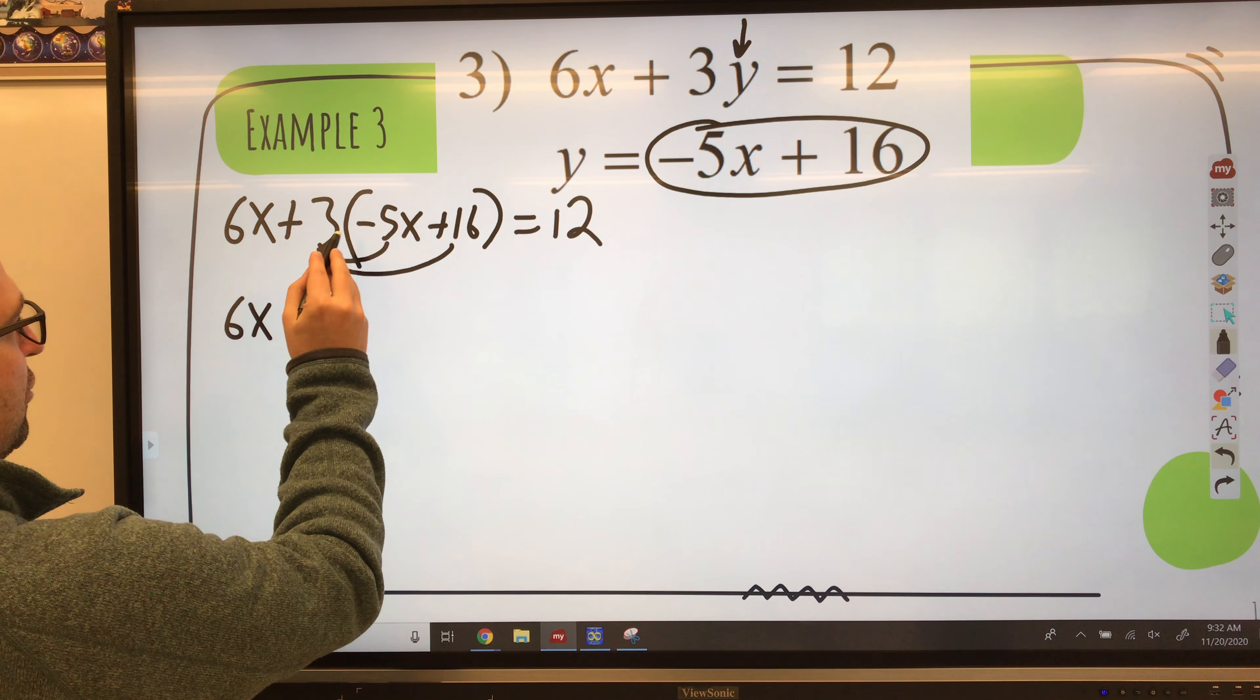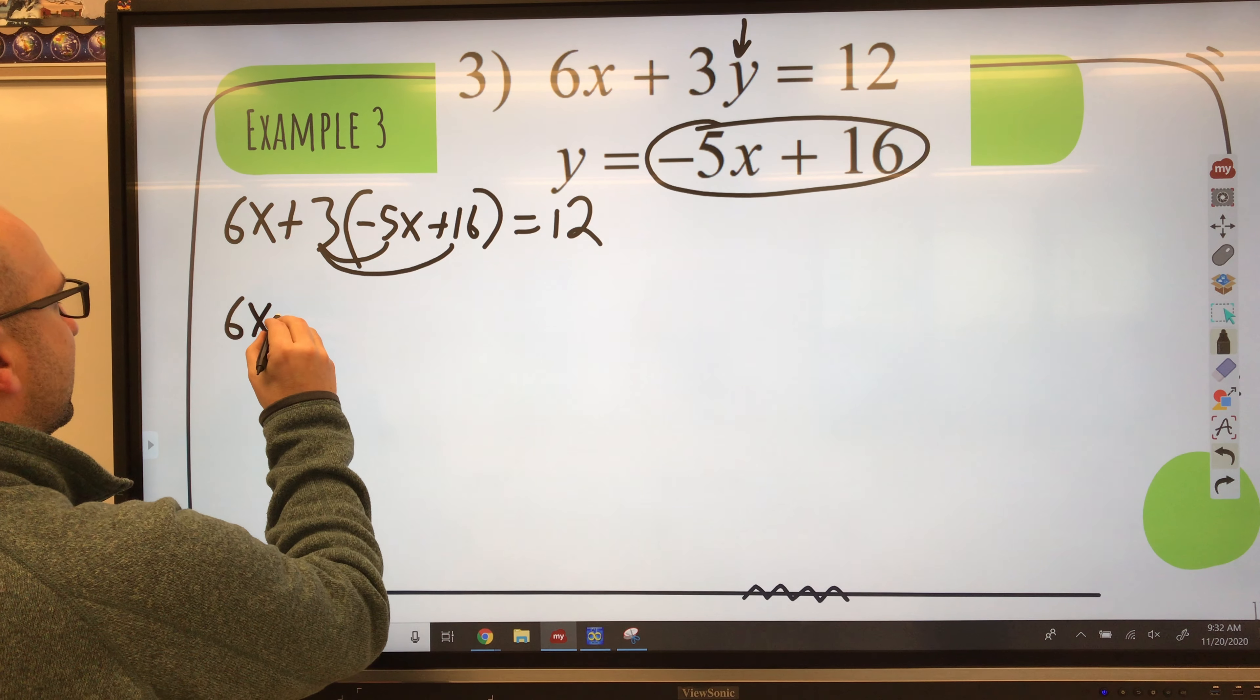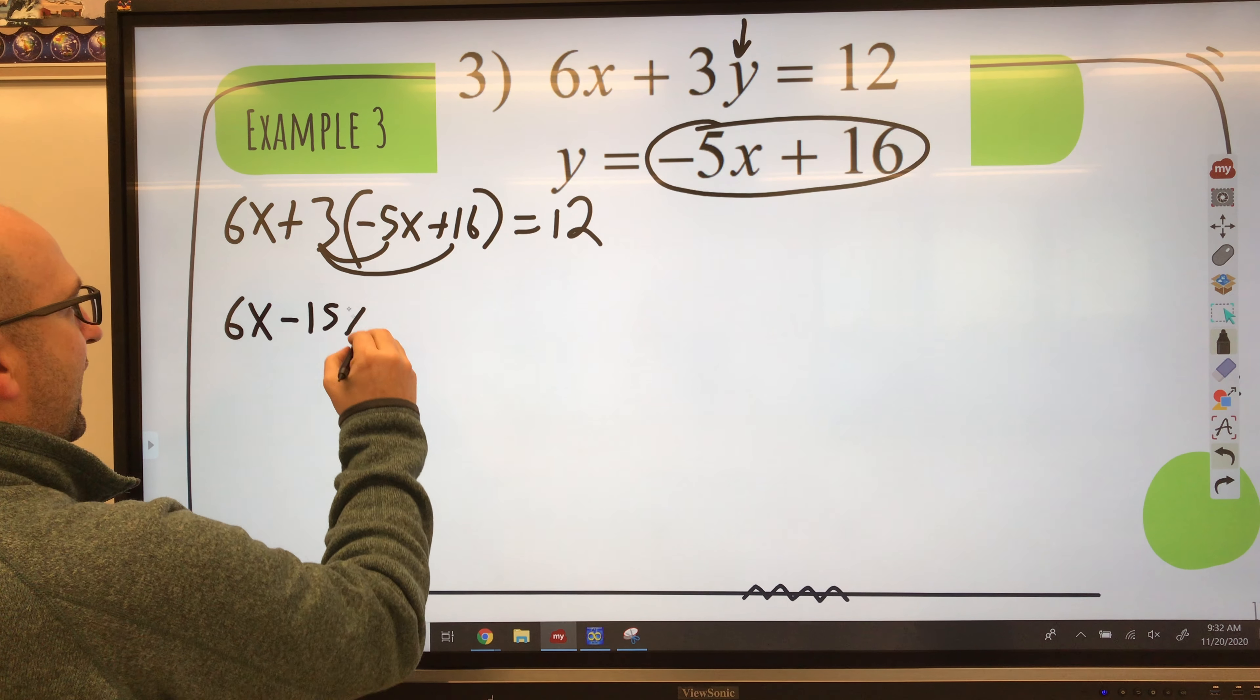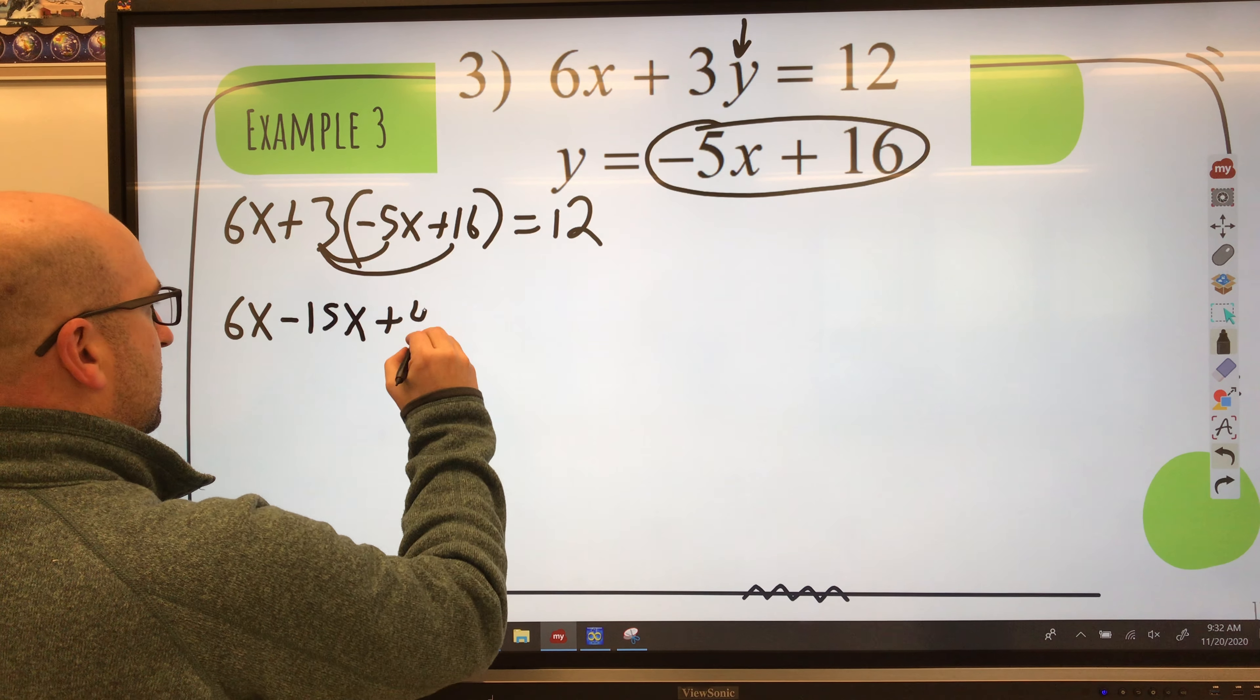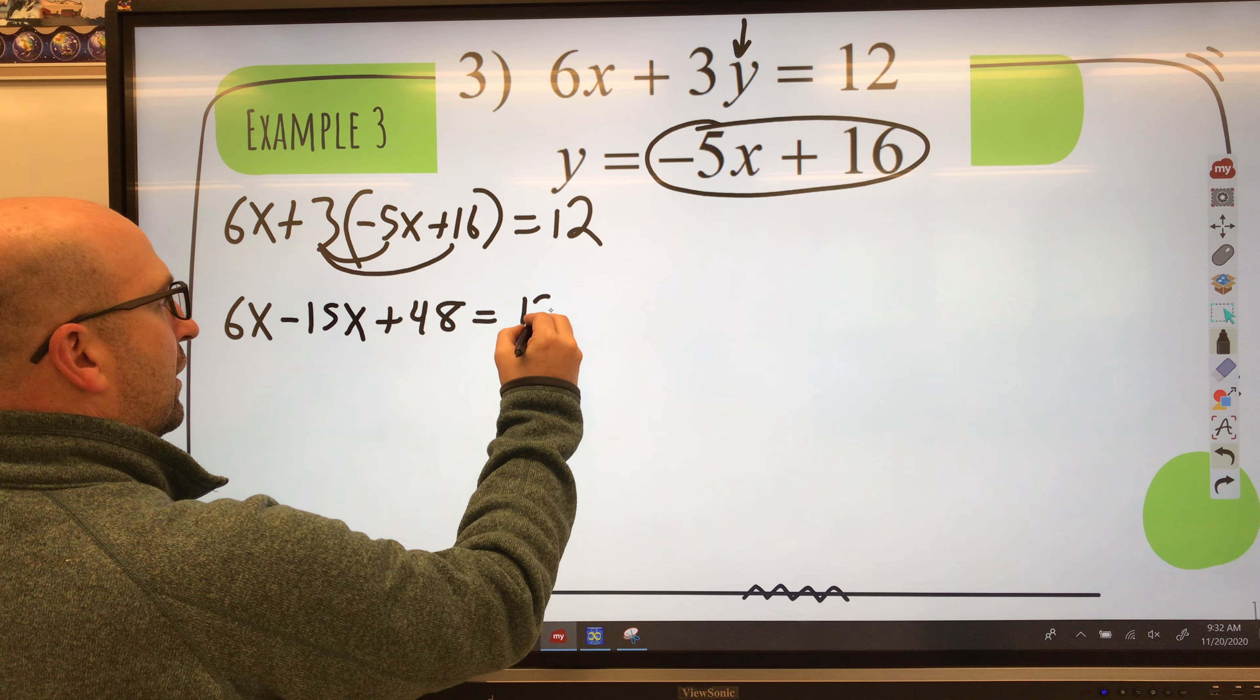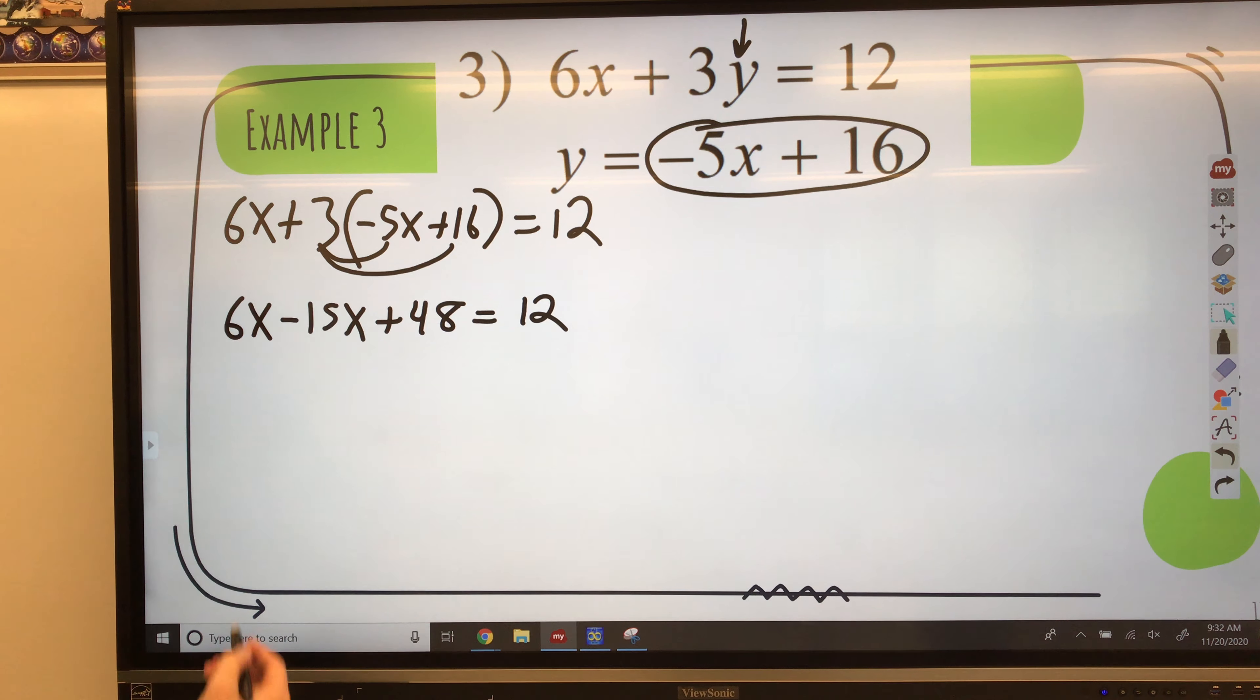So 6x, 3 times negative 5x is negative 15x. 3 times 16 is 48 equals 12. I've got to combine like terms.